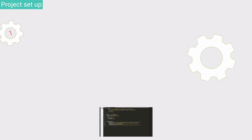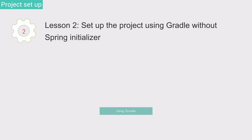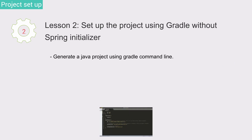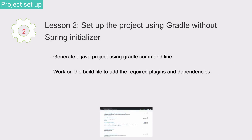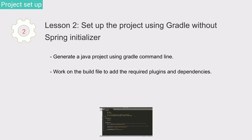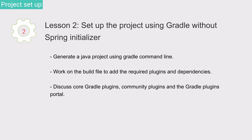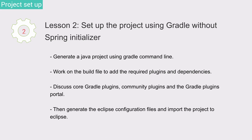Lesson 2: Set up the project using Gradle without Spring Initializer. In this lesson, we generate a Java project using the Gradle command line, then work on the build file to add the required plugins and dependencies. We discuss core Gradle plugins, community plugins, and the Gradle plugins portal. Then we generate the Eclipse configuration files to import the project into Eclipse.